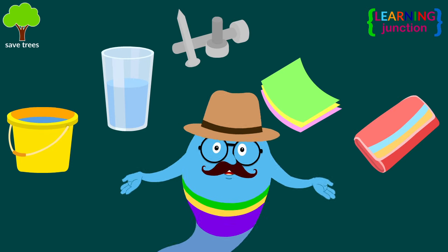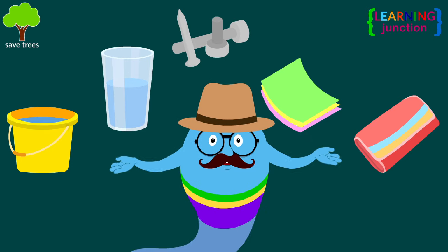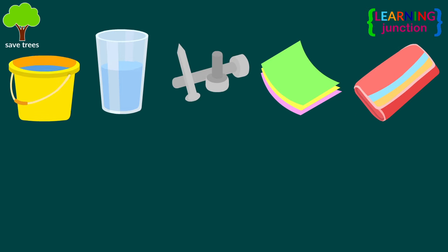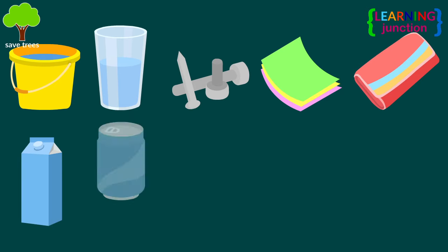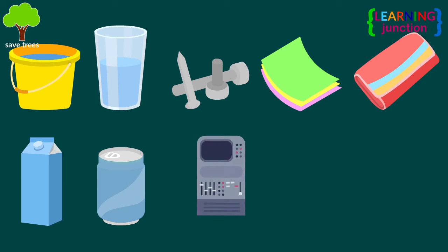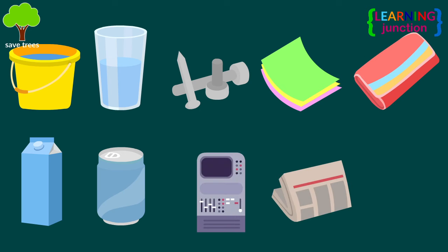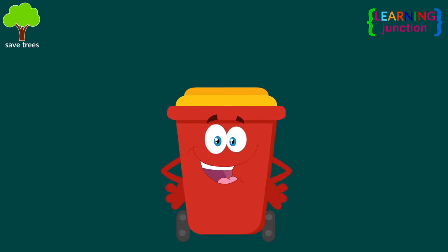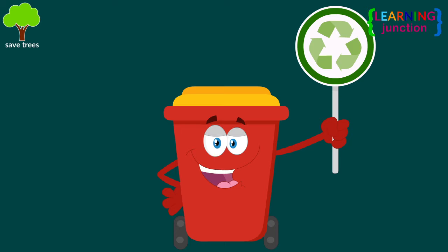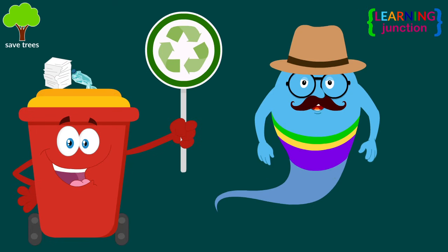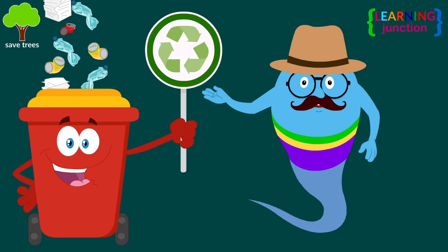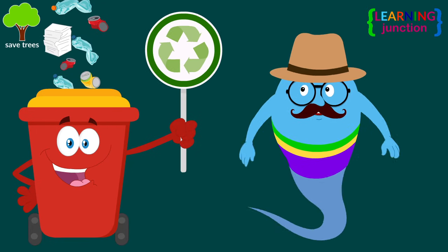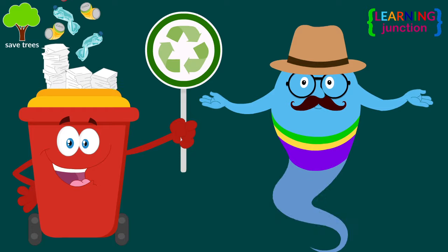Typical used items made of these materials include plastic milk cartons, soda cans, machines, newspapers and cardboard boxes. Recycling is actually a complex process and is different for each type of material. Let's learn about these materials.